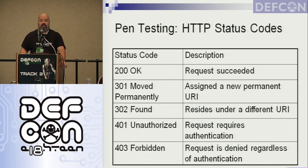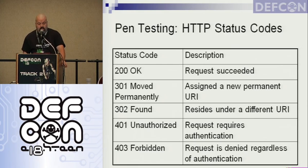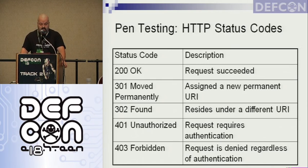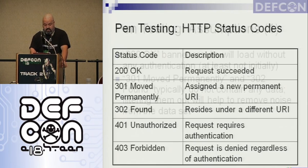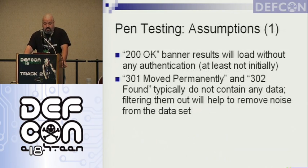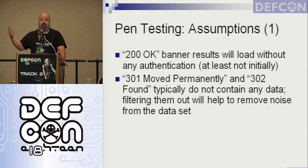A quick overview of HTTP status codes: 200 OK means the request succeeded — this is typically our best result because it means we'll be able to view the page without any authentication at all. 301 and 302 are moved or found, and those are not terribly useful to us. 200 OK is really what we're looking for because it's not going to ask us for a password, at least not to view that page.